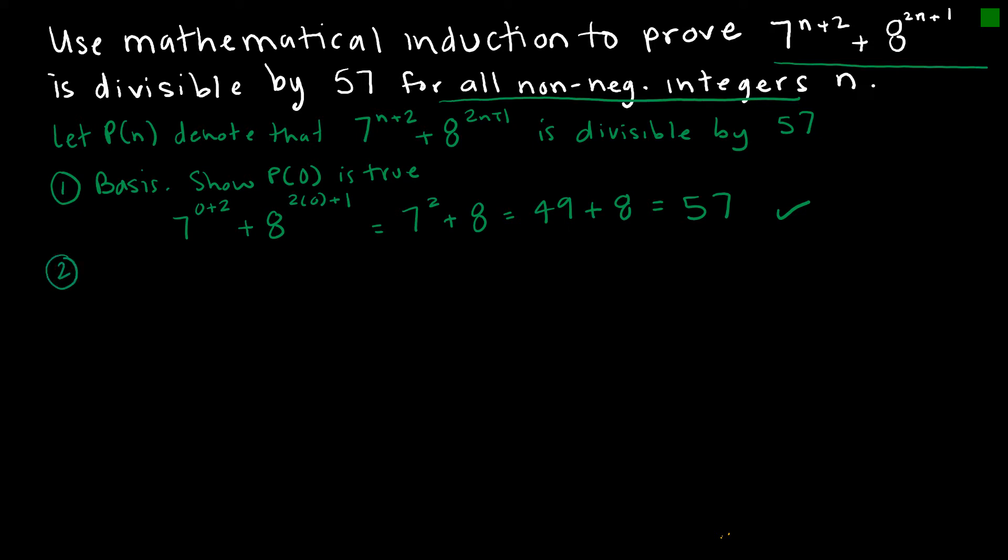Now I want to do my inductive step. My inductive step says assume P(k) is true and prove that P(k+1) is true. My inductive hypothesis is going to be that 7^(k+2) + 8^(2k+1) is divisible by 57.